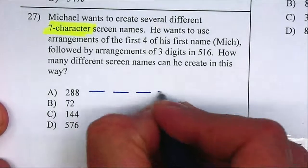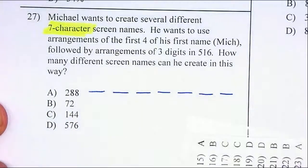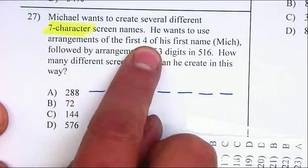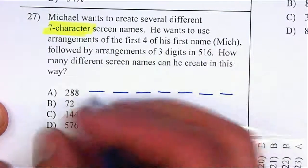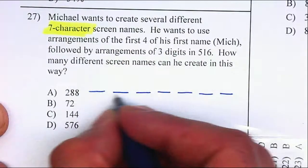One, two, three, four, five, six, seven. He wants to use arrangements of the first four of his first name, so M-I-C-H, so M-I-C-H.